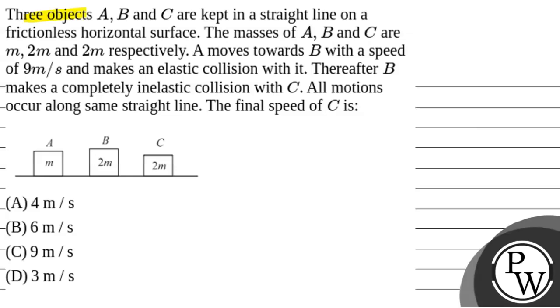The question says that three objects A, B and C are kept in a straight line on a frictionless horizontal surface. The masses of A, B and C are M, 2M and 2M respectively. A moves towards B with a speed of 9 meter per second and makes an elastic collision with it.